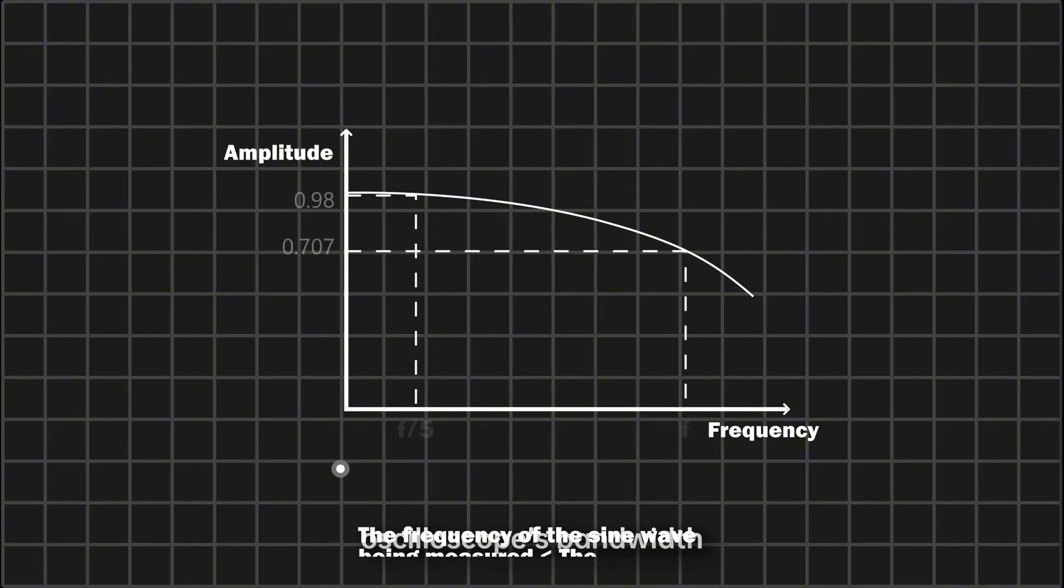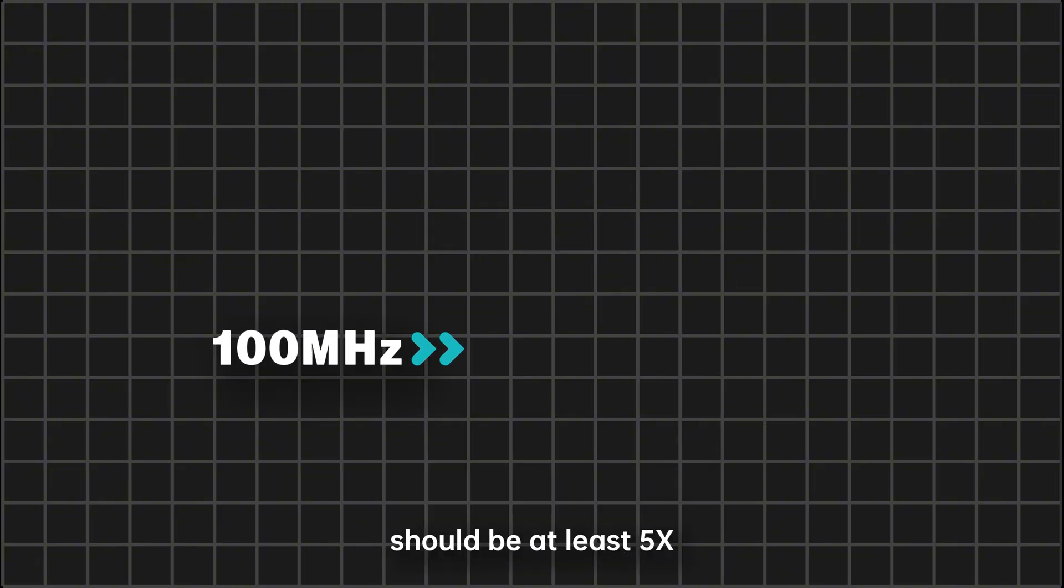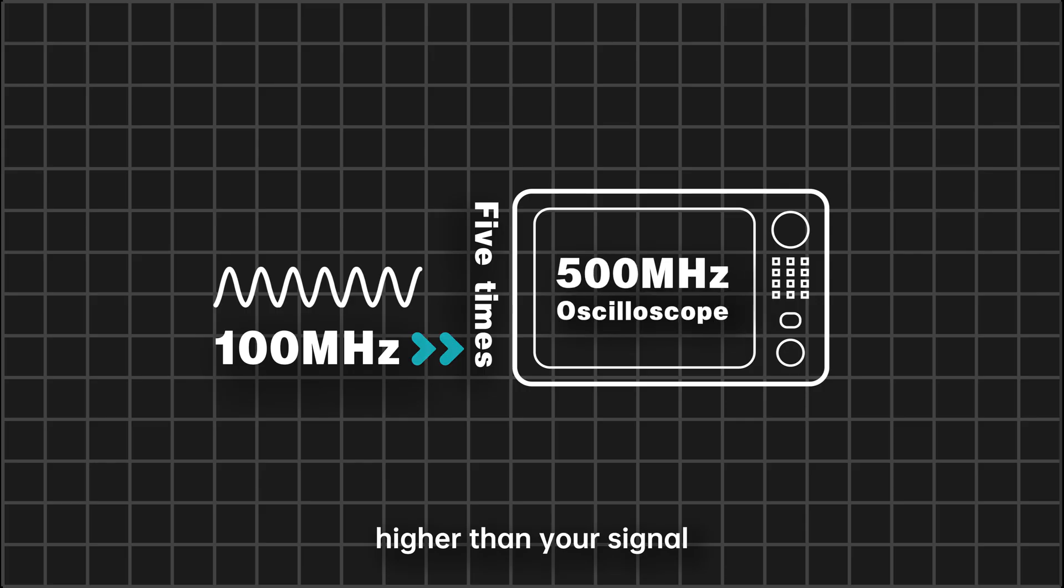To measure accurately, the oscilloscope's bandwidth should be at least five times higher than your signal.